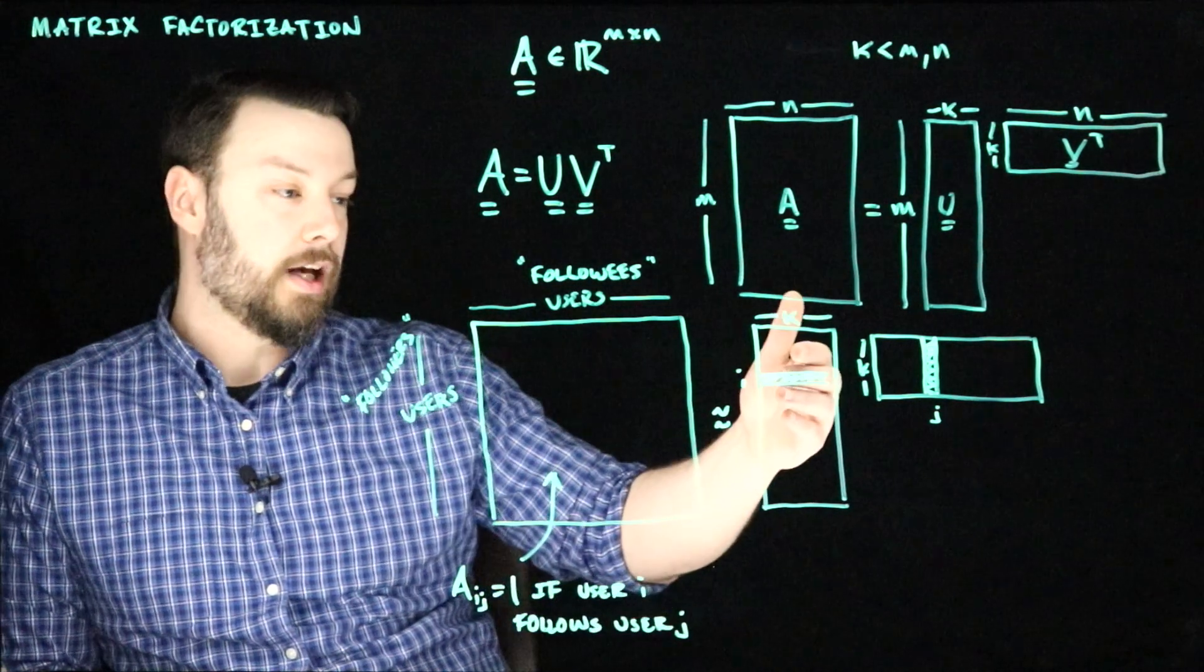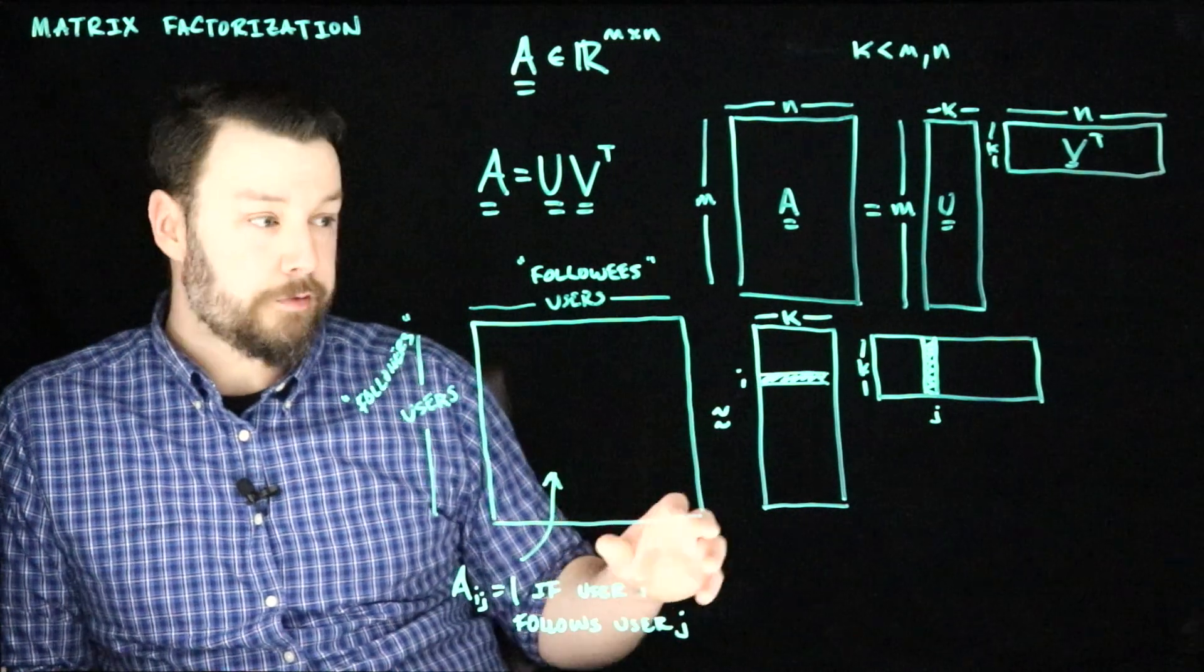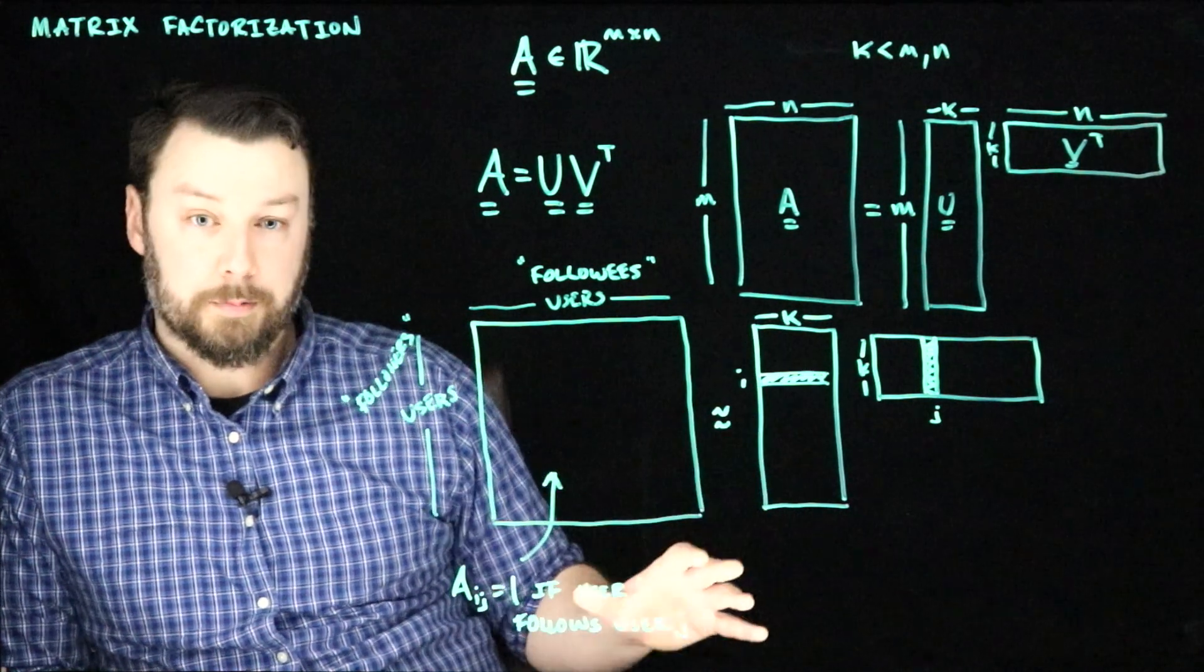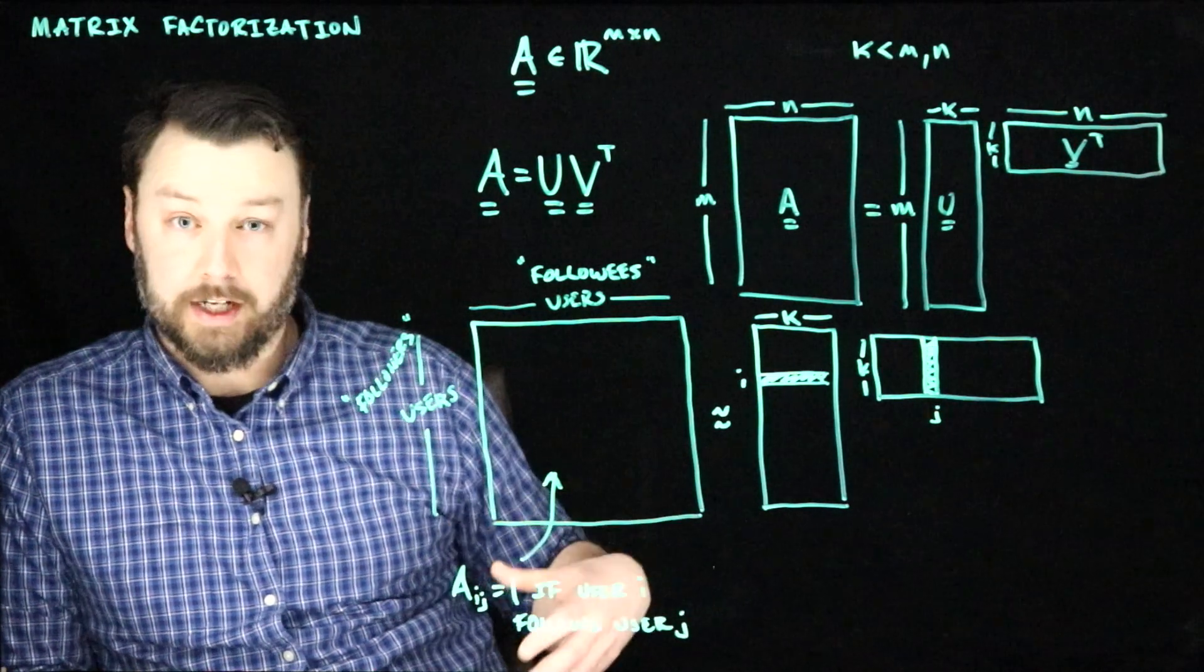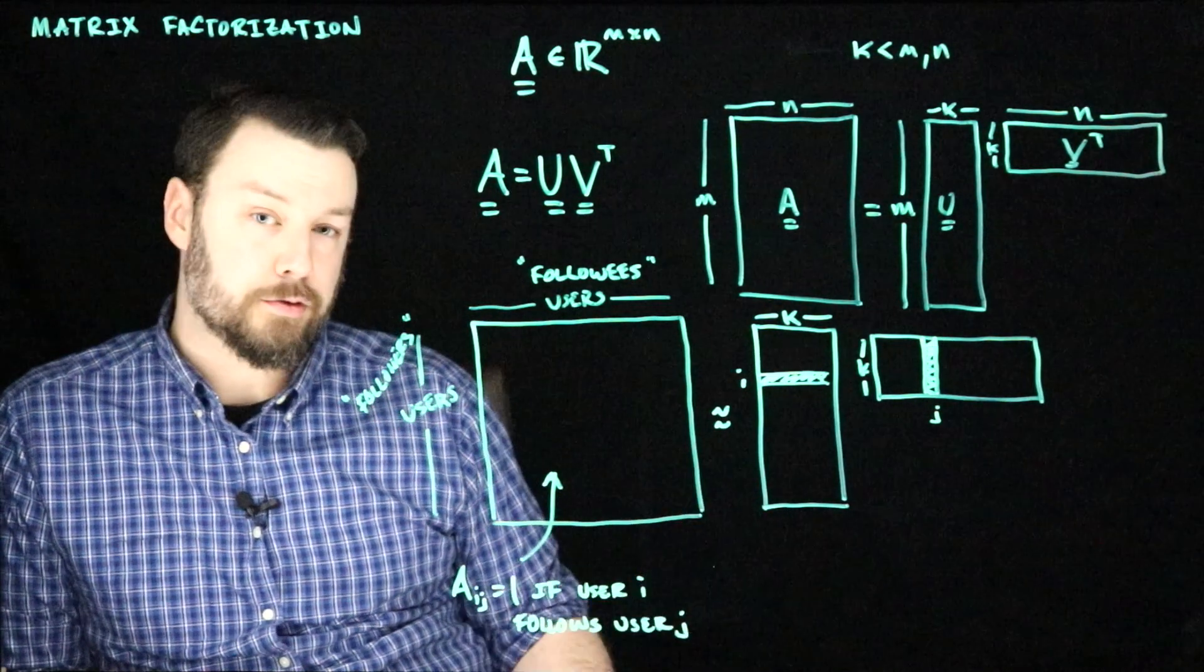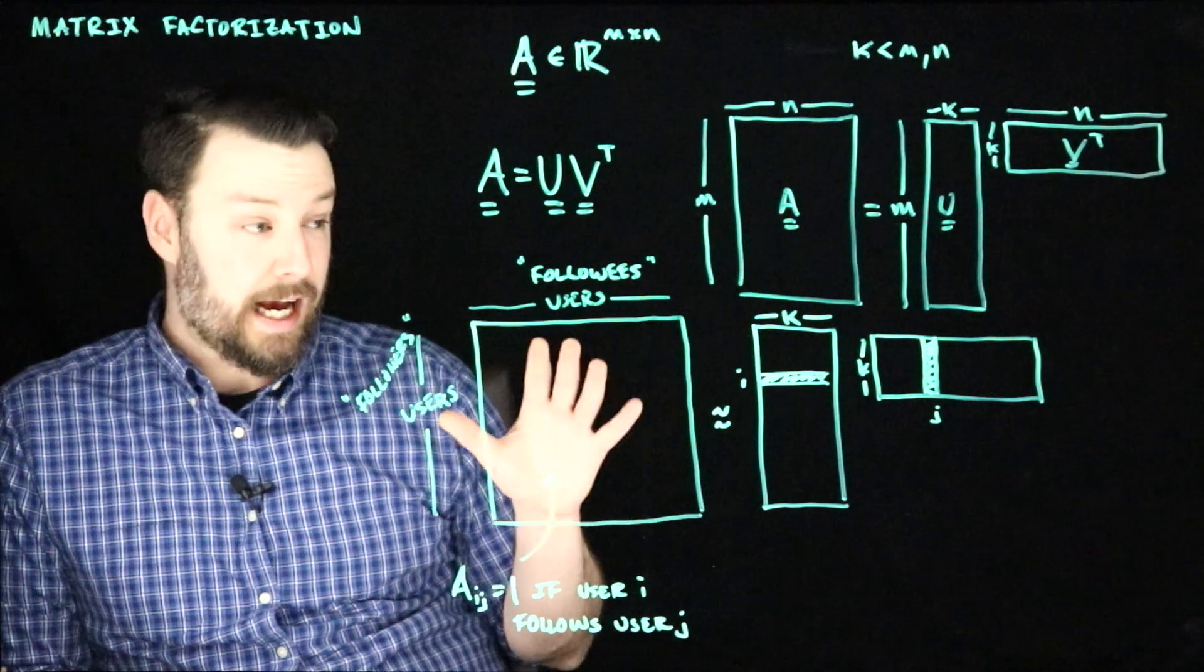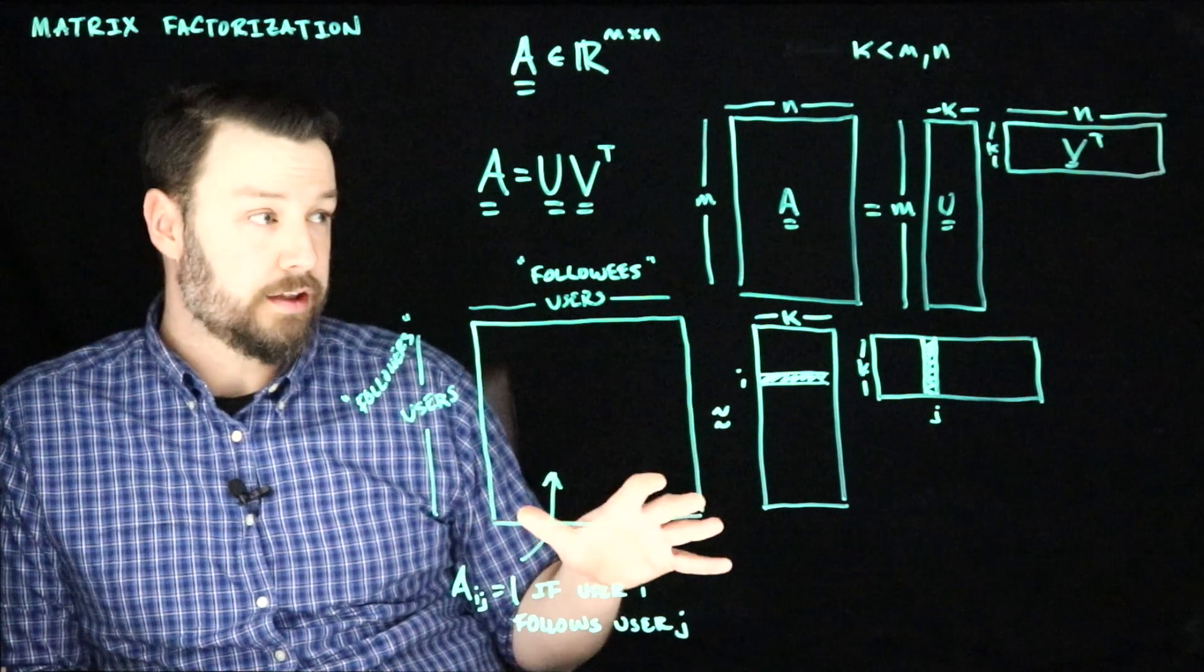Or it allows you to go in and group different users. So you might discover that some entries correspond to different geographic locations. And so then when you find out that someone is from that area and you make recommendations of content that's relevant to those people, the point is things like SVD actually do give us ways to solve these kinds of problems.